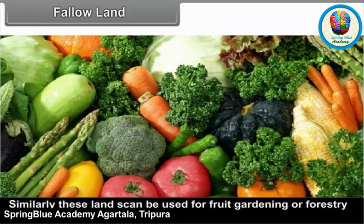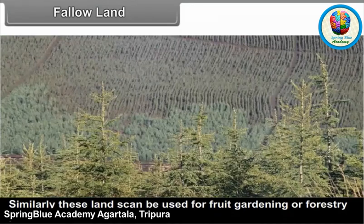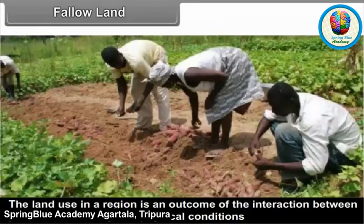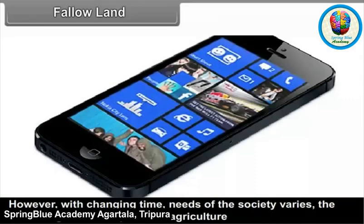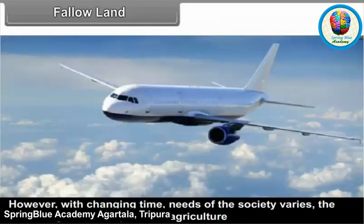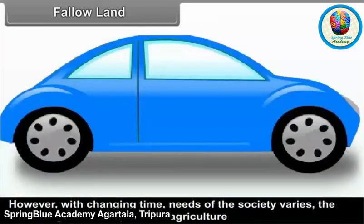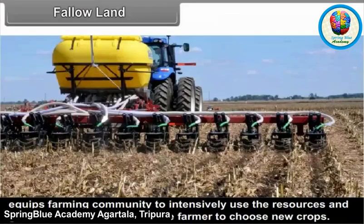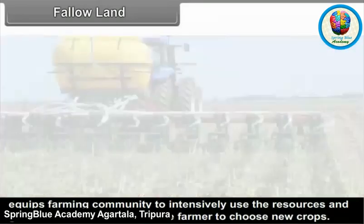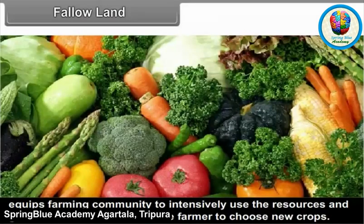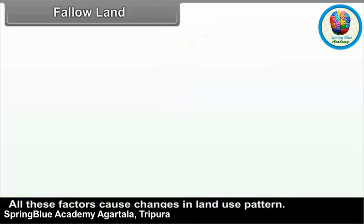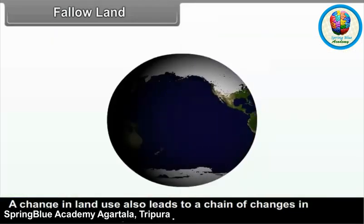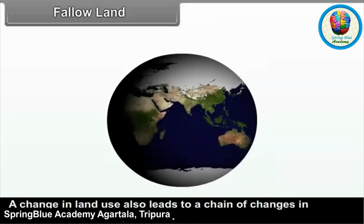Efforts are required to bring current fallow land under cultivation if irrigation is made available. Similarly, these lands can be used for fruit gardening or forestry plantation. The land use in a region is an outcome of the interaction between the peasant community and physical conditions controlling agrarian activity. However, with changing time, needs of the society vary. Technological development in agriculture equips the farming community to intensively use resources, and global market conditions dictate farmers to choose new crops. All these factors cause changes in land use pattern, which also leads to a chain of socio-environmental problems.